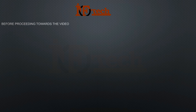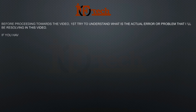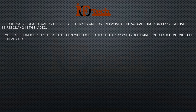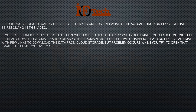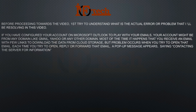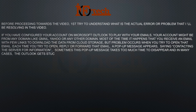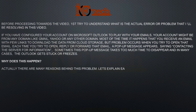Before proceeding, first understand the actual error or problem that will be resolved in this video. If you have configured your account on Microsoft Outlook to manage your emails — your account might be from any domain like Gmail, Yahoo, or any other domain — most of the time it happens that you receive an email with a few links to download data from cloud storage, but a problem occurs when you try to open that email. Each time you try to open, reply, or forward that email, a pop-up message appears saying 'Contacting the server for information.' Sometimes this pop-up takes too much time to disappear, and in many cases Outlook gets stuck or freezes.